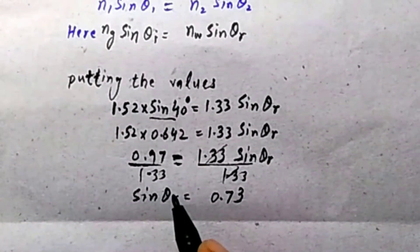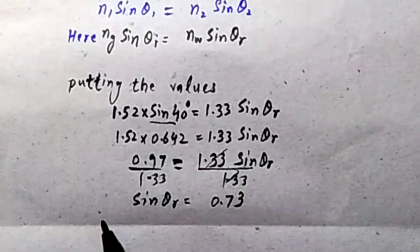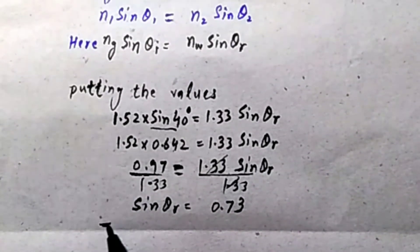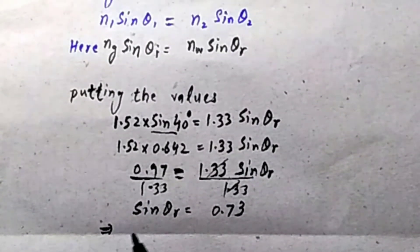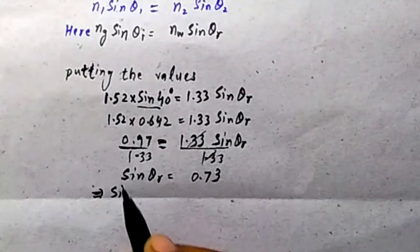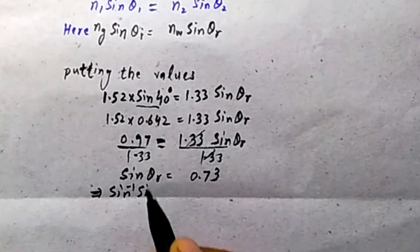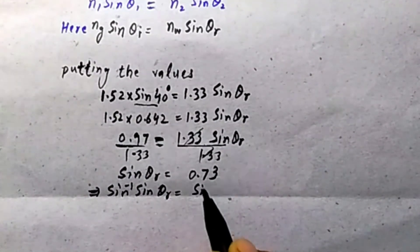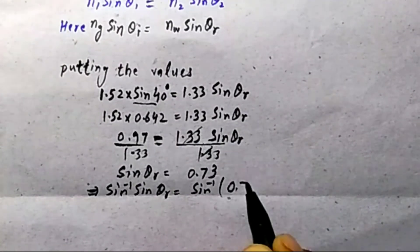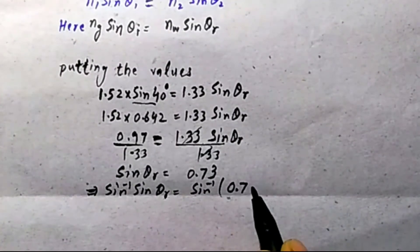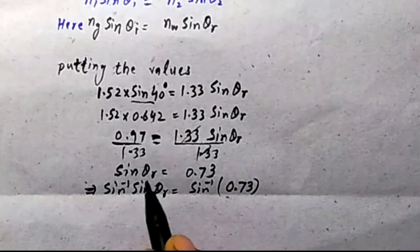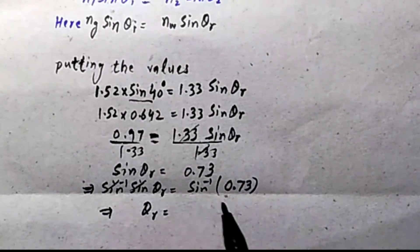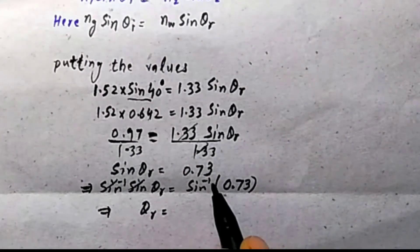Now theta_R is the angle of refraction. Taking sin inverse on both sides: sin⁻¹ cancels with sin, leaving theta_R = sin⁻¹(0.73). Use the calculator: press shift then sin button.